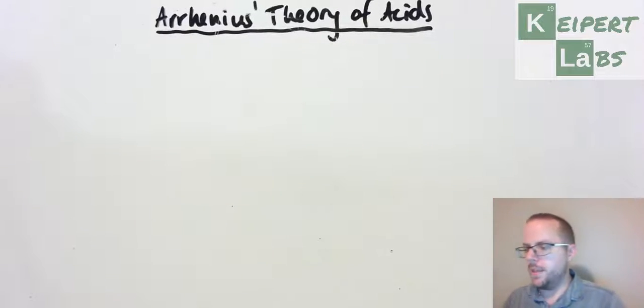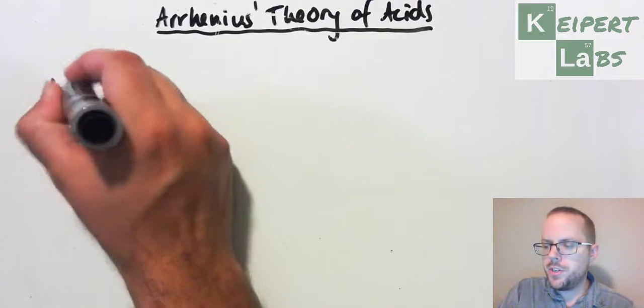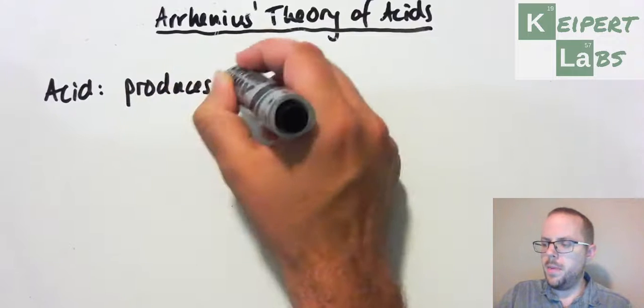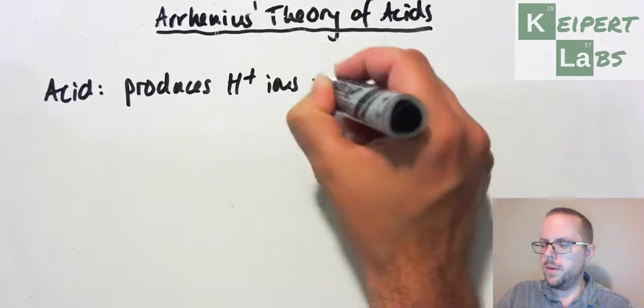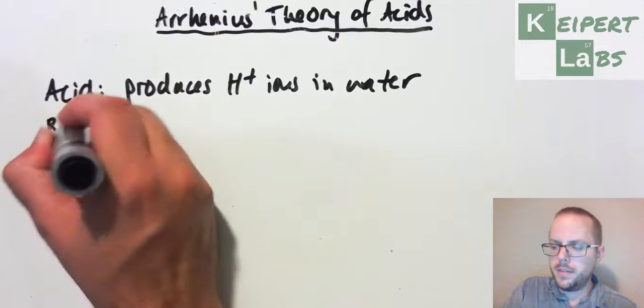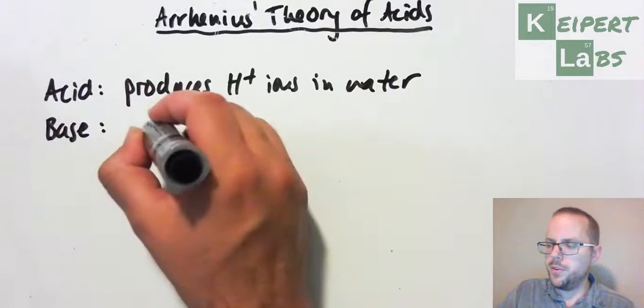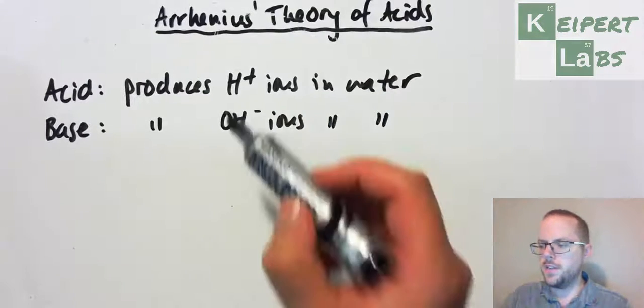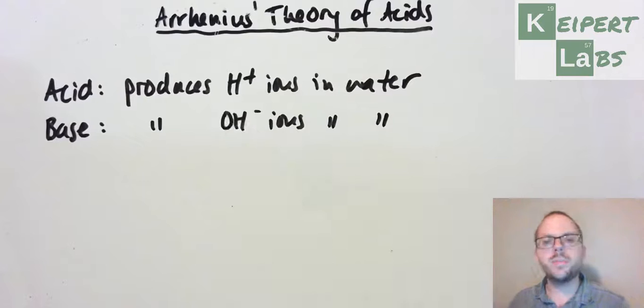So Arrhenius' theory, just to refresh your memory, was that an acid produces H+ ions in water. That's his definition of an acid. And a base produces hydroxide ions in water. The presence of either of these two ions when you put the substance in water helps to characterize a substance as an acid or a base. That's the working definition.